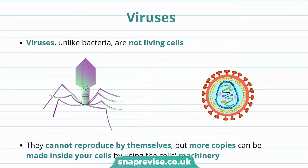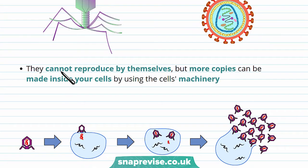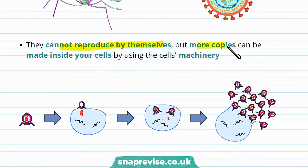Viruses can also cause disease. Viruses, unlike bacteria, are not living cells. As they aren't living, it means they can't reproduce by themselves. But more copies of the viruses can be made inside your cells by using the cell's machinery. They do this by taking over a cell and causing that cell to make more viruses.